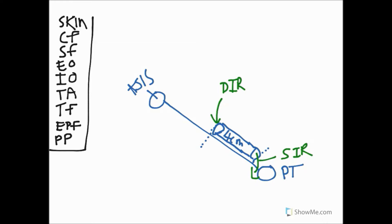Let's now talk about the contribution of the abdominal wall musculature to the various walls of the inguinal canal. The anterior wall is formed along its entire length by the aponeurosis of the external oblique muscle, and it is also reinforced laterally by fibers of the internal oblique muscle, which originates from the lateral two-thirds of the inguinal ligament, enabling it to supply part of the anterior wall.